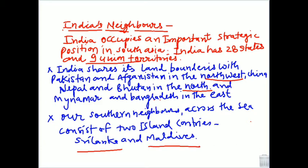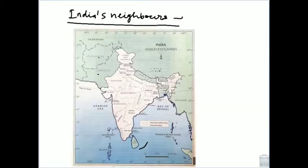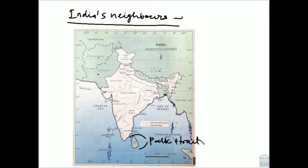Sri Lanka and Maldives are our island neighbors to the south. Looking at India's map again, we can see that India and Sri Lanka are separated. The narrow channel that separates the two countries is called the Palk Strait.